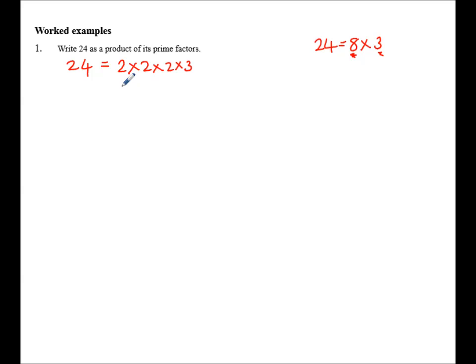We always arrange, or we try and arrange the numbers in ascending order. Once we've done that, we write it as a product of its Prime Numbers in exponential form. How many 2's have I got multiplied together? Well, I have 3. So 2 to the power of 3 multiplied by 3 is 24 written as a product of its Prime Factors.